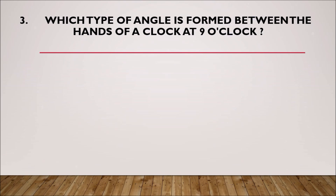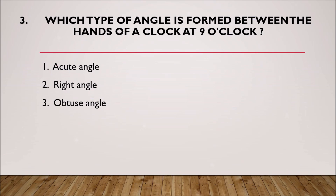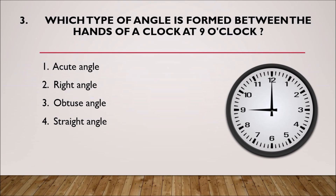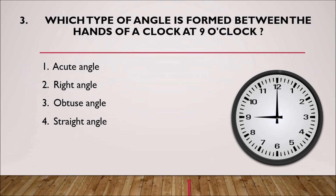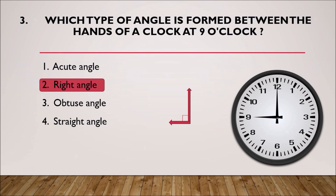Which type of angle is formed between the hands of a clock at 9 o'clock? Options: right angle, opposite angle, straight angle. Here we have the clock. The minute hand and hour hand form a 90-degree angle, so the answer is right angle. The second option is the correct answer.